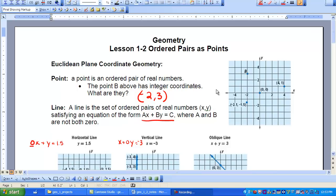You graphed lines, you graphed points, and you had equations for those lines, and that's what we're going to look at in this lesson. First of all, a point is an ordered pair of real numbers.